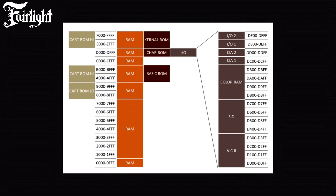The C64 has 16 kilobytes of ROM total. One 8K block is the BASIC ROM — the BASIC interpreter that reads and executes BASIC programs. The other 8K block is the Kernel ROM, which is the screen editor and all the I/O. The tape routine is there, and it also communicates over the serial bus. The serial bus is generic, so device 4 (the printer) and device 8 are seen the same at the kernel level — it just facilitates the framework for communicating with serial devices.